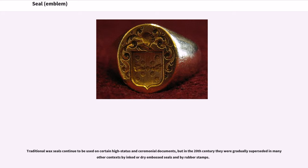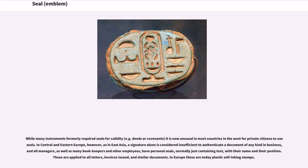Traditional wax seals continue to be used on certain high-status and ceremonial documents, but in the 20th century they were gradually superseded in many other contexts by inked or dry-embossed seals and by rubber stamps. While many instruments formerly required seals for validity — e.g., deeds or covenants — it is now unusual in most countries in the West for private citizens to use seals. In Central and Eastern Europe, however, as in East Asia, a signature alone is considered insufficient to authenticate a document, and all managers, as well as many bookkeepers and other employees, have personal seals. In Europe these are today plastic self-inking stamps.